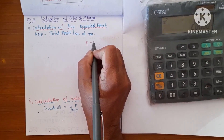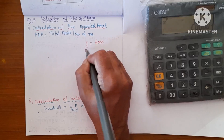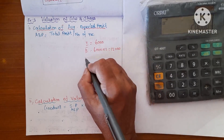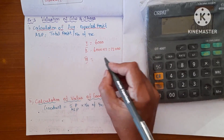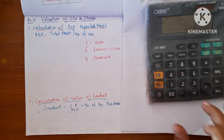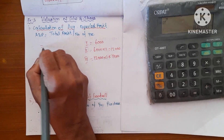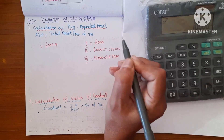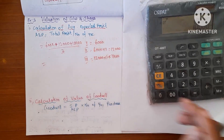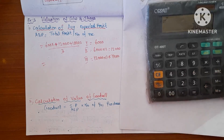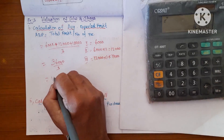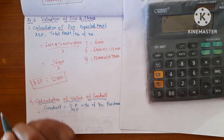The first year profit is $6,000. The second year profit is $12,000. The third year is 1.5 times the second year: 12,000 × 1.5 = $18,000. Total profit: 6,000 + 12,000 + 18,000 = 36,000, divided by number of years 3, giving an average expected profit of $12,000.